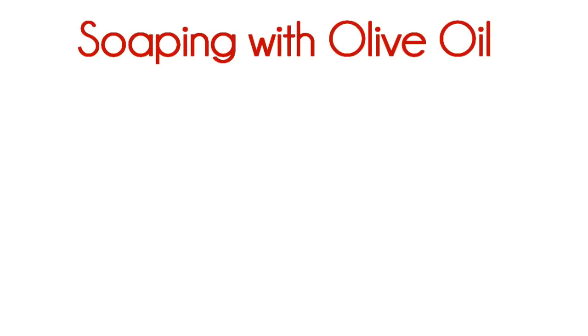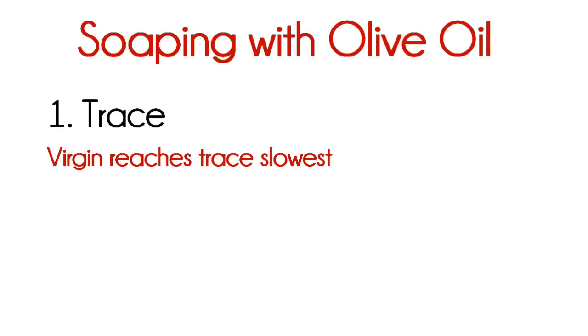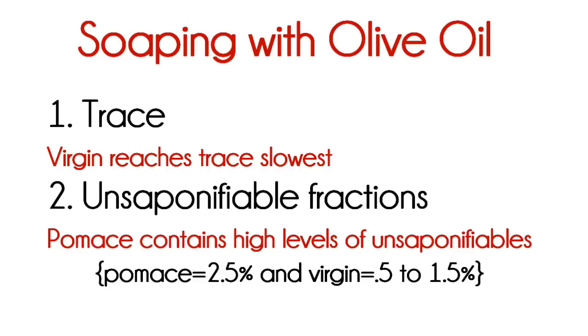So what does this mean in soap making? Well, a little and a lot. Castile can be made with any grade as long as it is 100% olive oil. The type of oil used will affect a few factors, one being trace. Higher grade olive oils take longer to reach trace, whereas pomace is quick to trace, and it contains a higher level of unsaponifiable fractions. In easy terms, there are more small amounts of olive oil that do not become mixed with the lye, making for a moisturizing bar of soap.